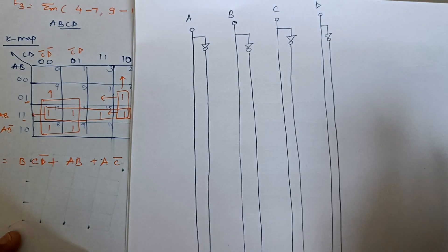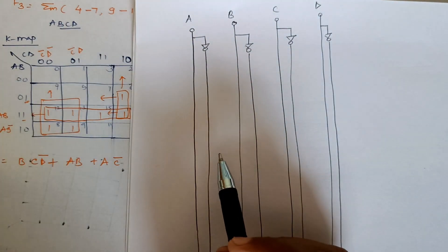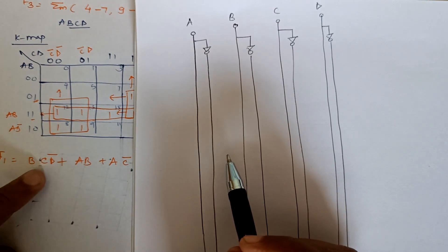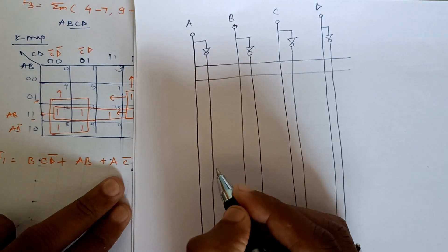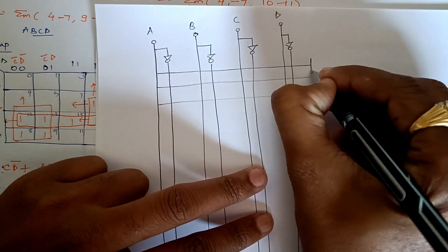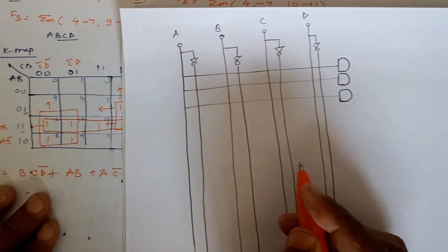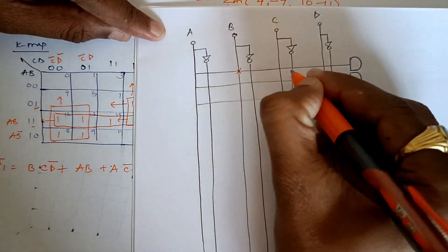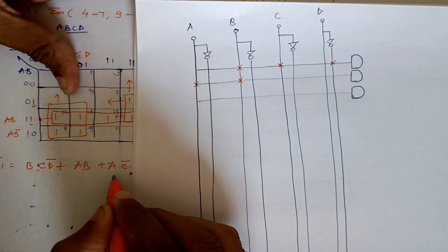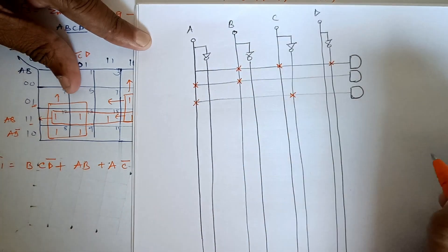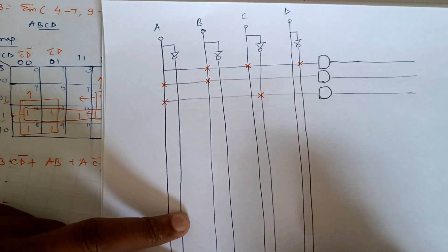Now that we have the expressions for F1, F2, and F3, we can directly go for the PAL structure. In the logic diagram, we have inputs A, B, C, D with their complements Ā, B̄, C̄, D̄. For the first function F1, which is B·C·D̄ + A·B + A·C̄, we connect AND gates. The first product term connects B, C, D̄; the second connects A, B; and the third connects A, C̄. Connecting these through an OR gate gives F1.